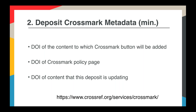Then you need to deposit a little bit of extra metadata on top of your regular DOI deposits. The absolute minimum is the DOI of the content you're adding the Crossmark button to, the DOI of your policy page, and if you are depositing a correction or retraction notice, you need to include the DOI that it is updating. Crossmark always works backwards - you deposit an original article, and if a correction is later issued, you deposit the correction with its own DOI and include the DOI of the original article to form the link between the two.